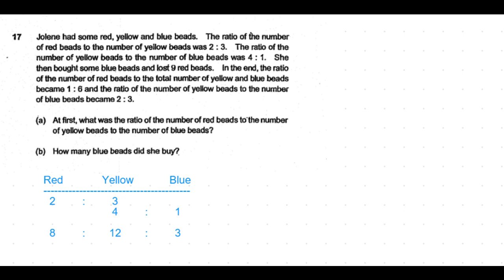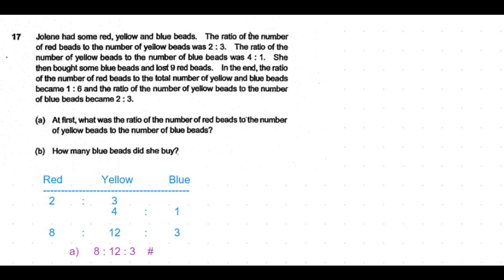So the common multiple between 3 and 4 is 12, so the yellow beads is 12. Correspondingly, the number of red beads become 8 and the number of blue beads become 3. So the final ratio between red to yellow to blue beads is 8:12:3. This is the answer for part 1 of the question.